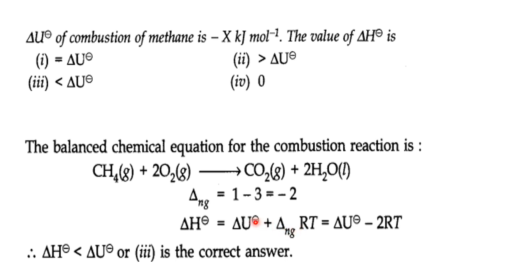Here Δn_g is the difference in total moles of gaseous products and reactants. On the product side there is one mole of CO₂ and two moles of H₂O — but only one mole of CO₂ is gaseous in this context; on the reactant side there are three moles. So Δn_g = 1 − 3 = −2. Therefore ΔH = ΔU + (−2)RT, meaning ΔH = ΔU − 2RT. This indicates ΔH is less than ΔU — option three is correct.